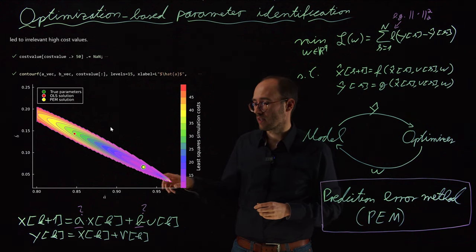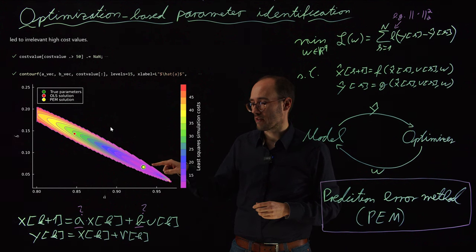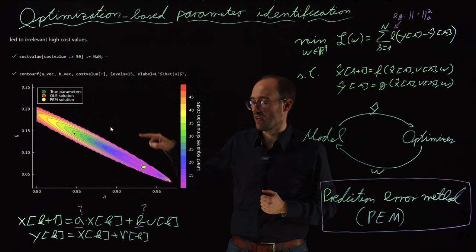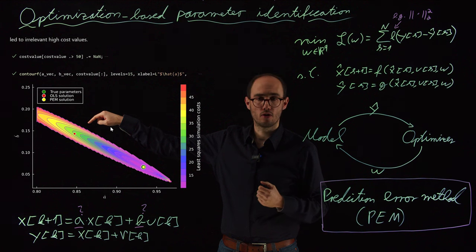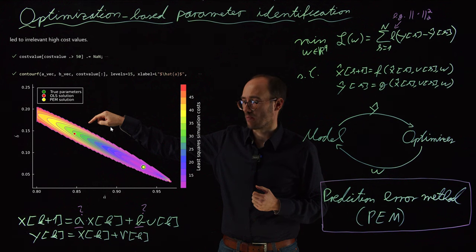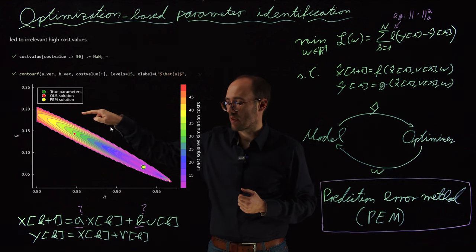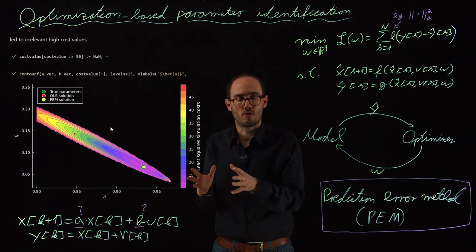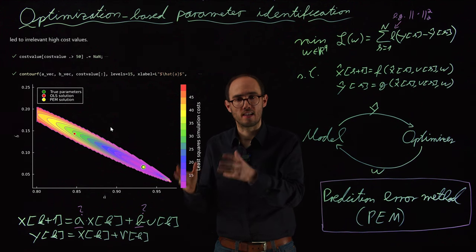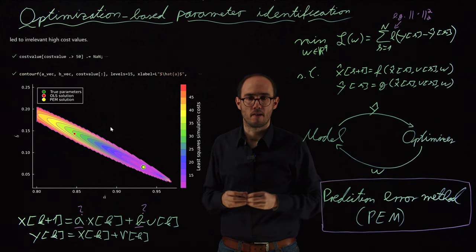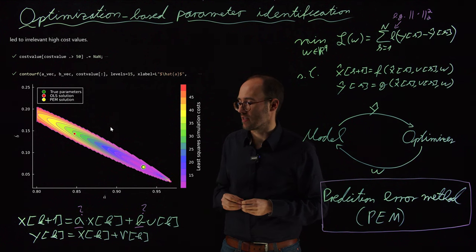As we can see here from this plot, the PEM solution perfectly lays over the parameters which we obtained from the real model which we wanted to identify. And here in red, the solution which we have obtained a couple of videos back using ordinary least squares fit on a dynamical system—they have the systematic deviation. They lead to much more higher costs because we have utilized this ordinary least squares approach, which we have derived for a static model, and we basically just threw it against the dynamical model, which led to this systematic error, which we can here also see in the cost plane over the parameters.